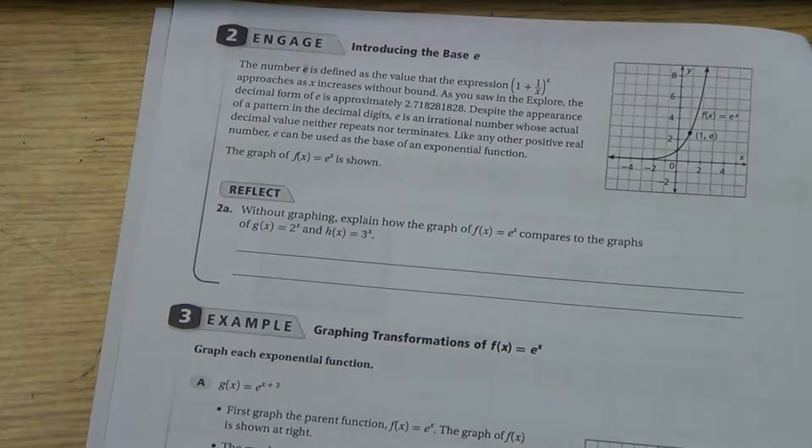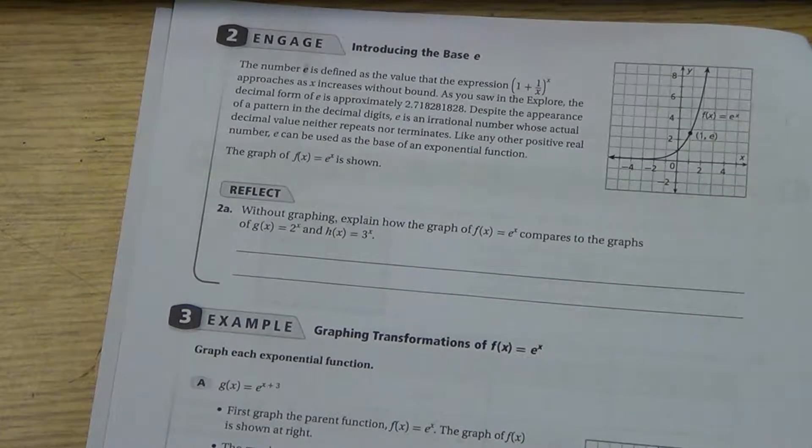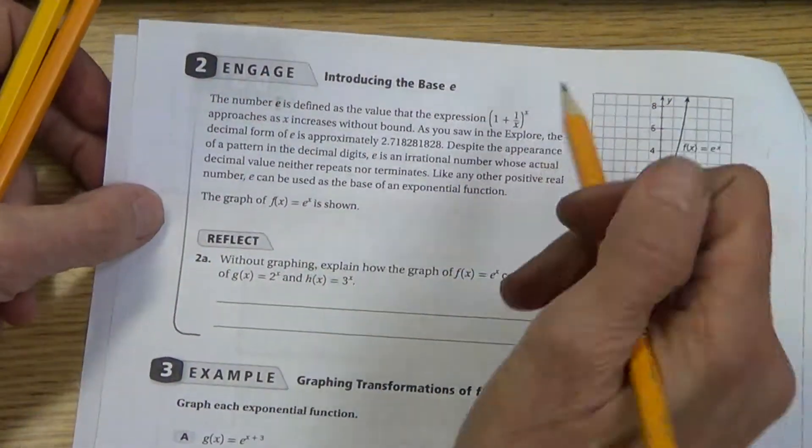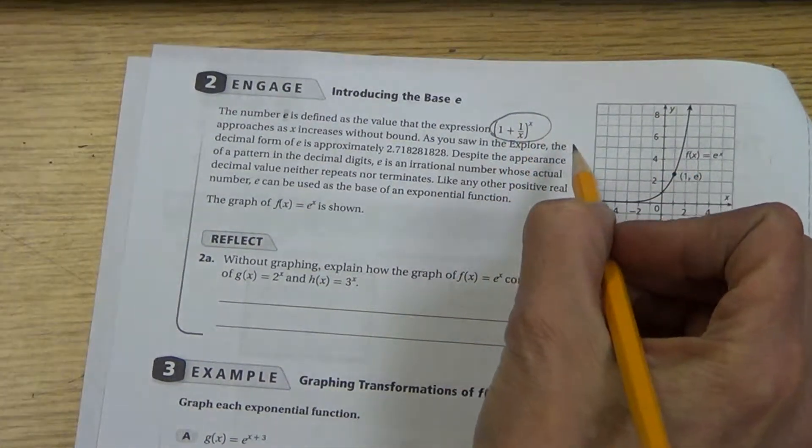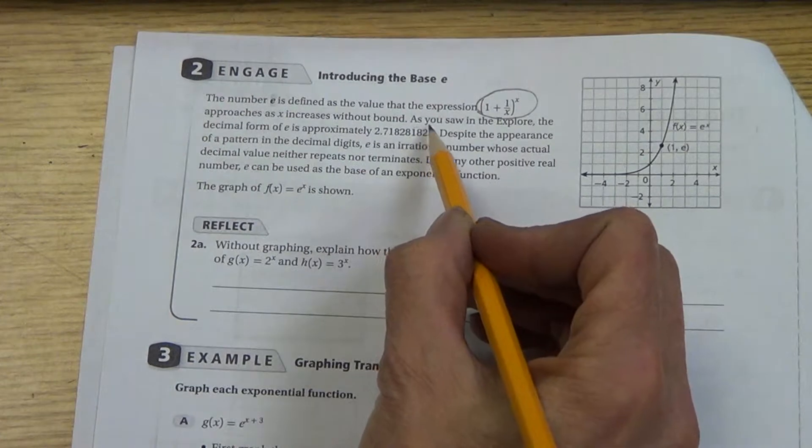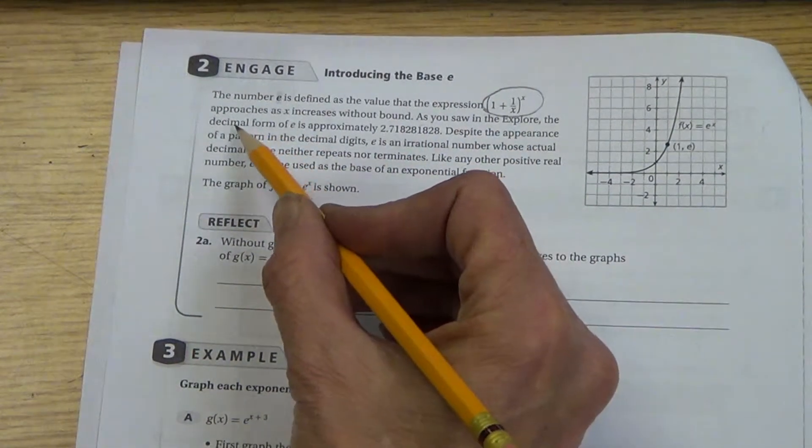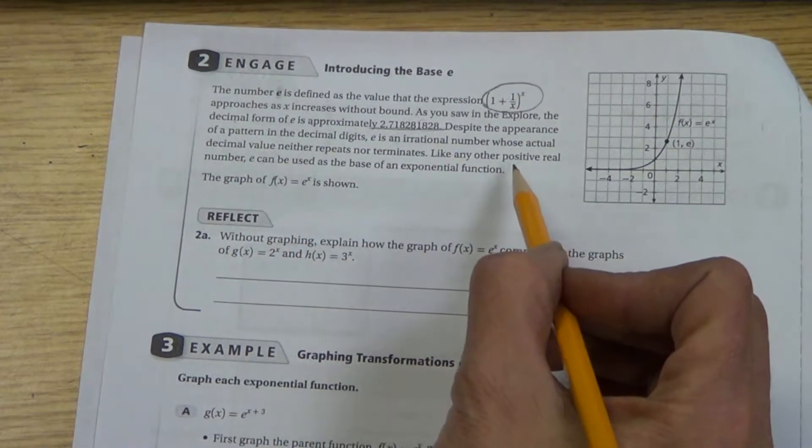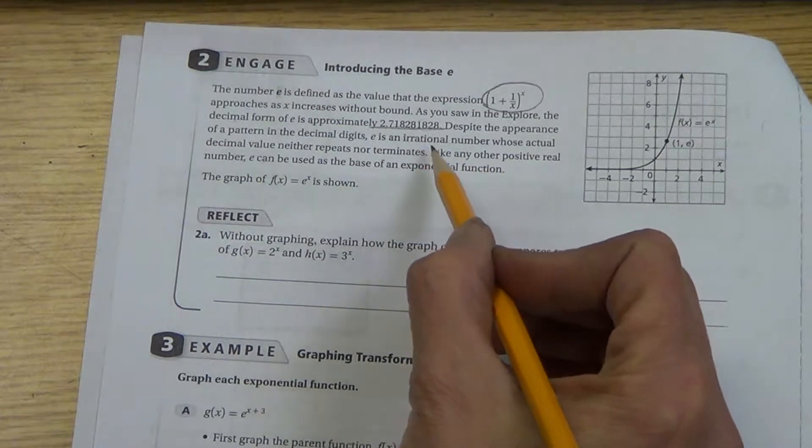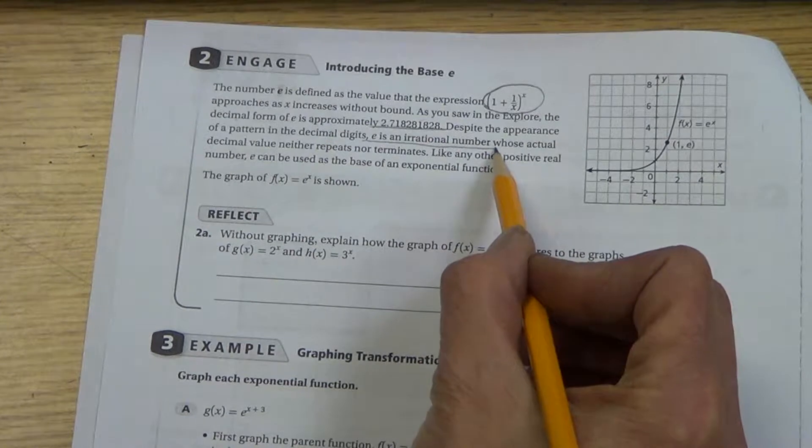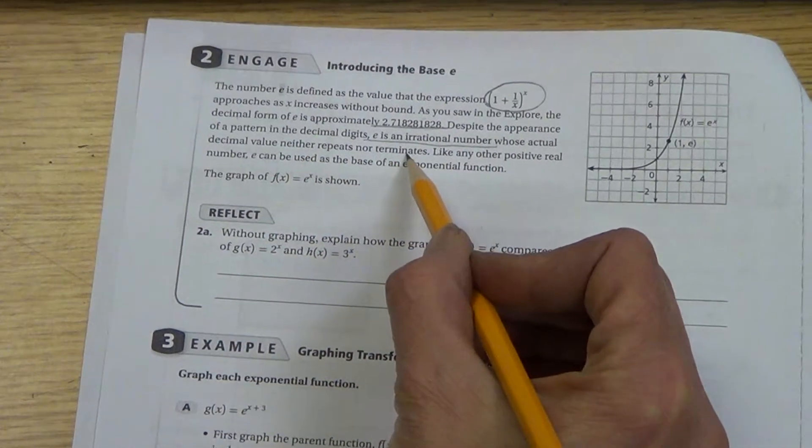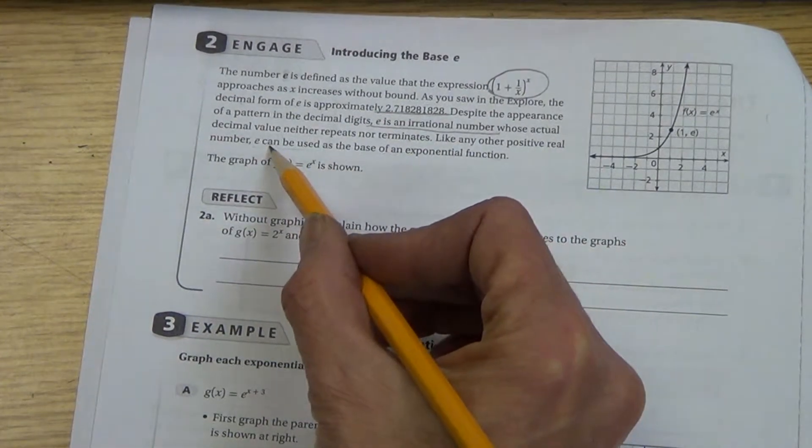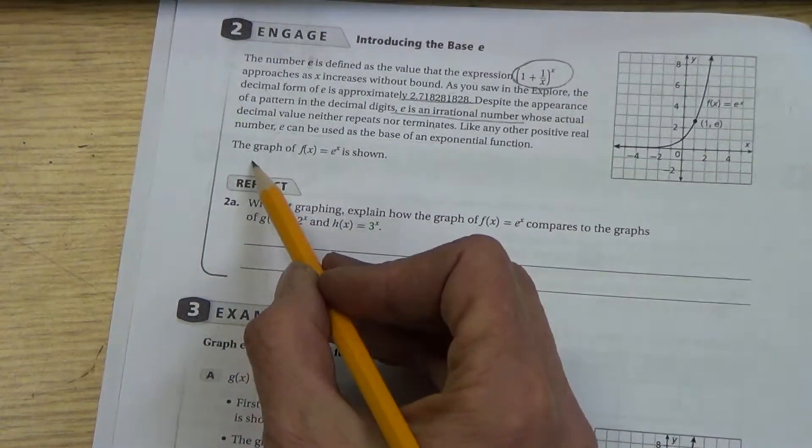So now, the number E is defined as the value of 1 plus 1 over X raised to X as X increases without bound. As you saw earlier, the decimal form of E is approximately this. So E is an irrational number. It's just like pi, whose actual decimal value neither repeats nor terminates. Like any other positive real number, E can be used as the base of an exponential function.